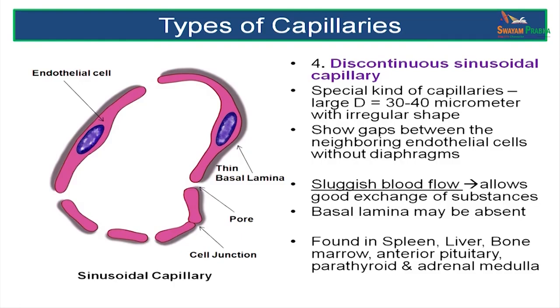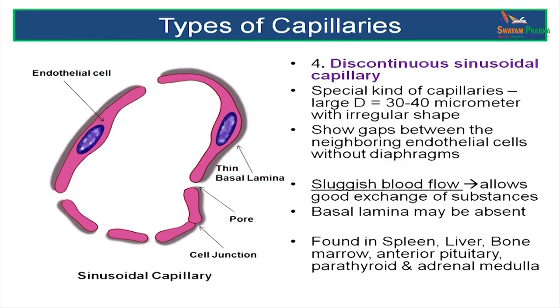The last type is the sinusoidal or discontinuous capillary. It is larger than the usual capillary and has large gaps within the cells and between the cells, called pores, with no diaphragm. This kind of sinusoidal capillary has very sluggish blood flow, which allows better exchange of substances. The basal lamina may be absent or very thin. These capillaries are found in the spleen, liver, bone marrow, anterior pituitary, parathyroid, and adrenal glands.